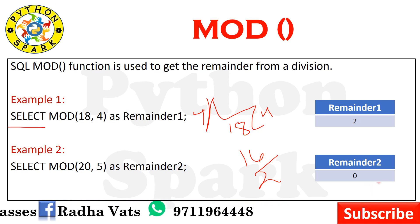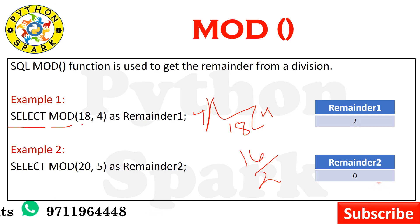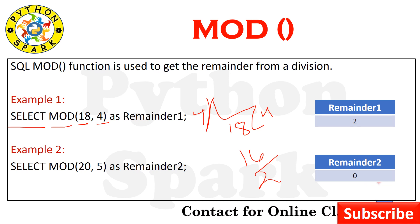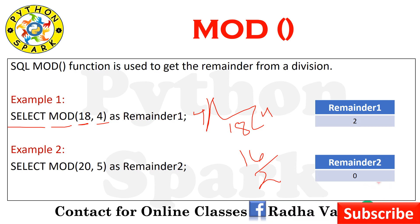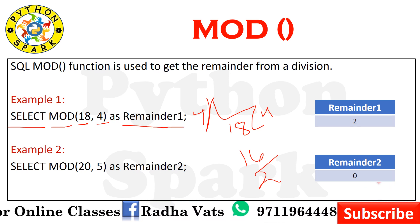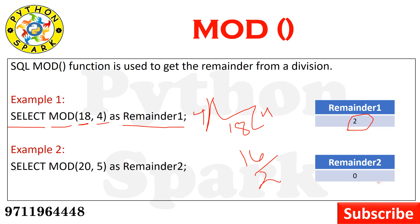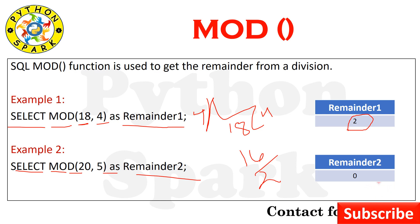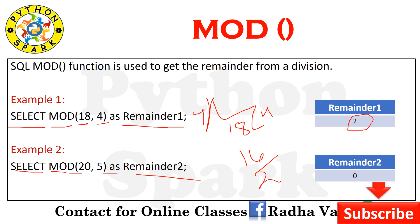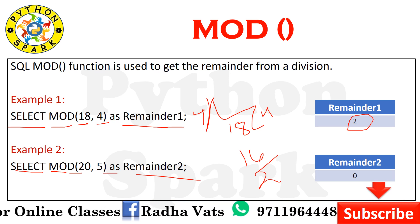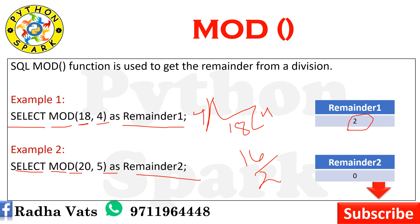SELECT MOD — the first value is the dividend, the second is the divisor. So SELECT MOD(18, 4) AS remainder_1 gives remainder 2. Next example: SELECT MOD(20, 5) AS remainder_2. If you divide 20 by 5, it is completely divisible, so remainder_2 is 0.